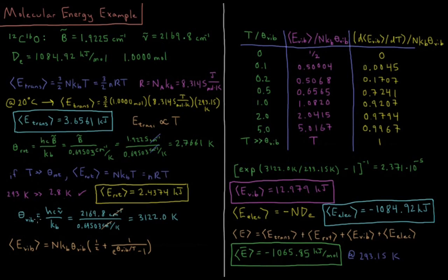Moving on to vibrational energy — the vibrational temperature θ_vib = hcν̄/k is equal to 2169.8 wavenumbers divided by 0.69503 wavenumbers per Kelvin, giving a vibrational temperature of 3122 Kelvin. The vibrational energy from the previous video is NK·θ_vib times (1/2 + 1/(e^(θ_vib/T) − 1)). So what does the term 1/(e^(θ_vib/T) − 1) end up being?